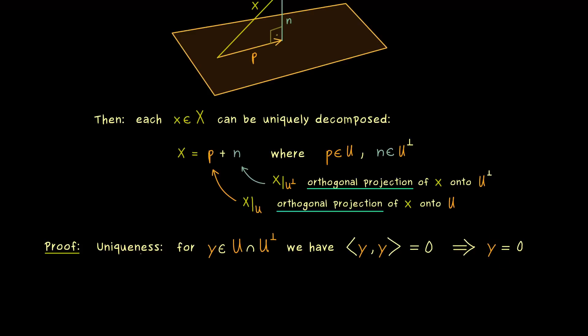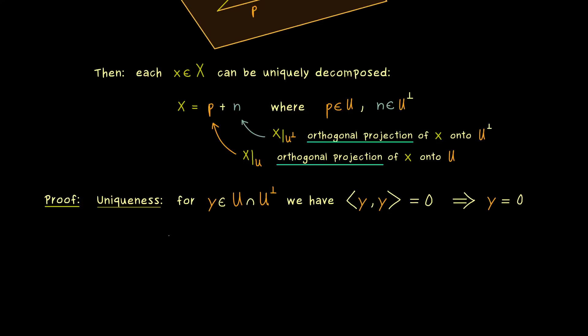And that's something we can use to show the uniqueness of our decomposition from above. So as always, for a uniqueness proof, we assume that we have two decompositions given. Hence, we assume that x can be written as p plus n, but also as p tilde plus n tilde. And obviously the assumptions are the same as before, p and p tilde come from U and n and n tilde from U perp.